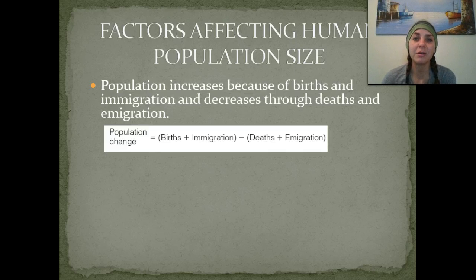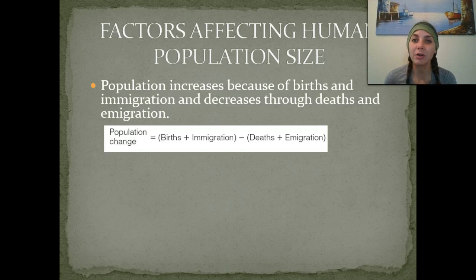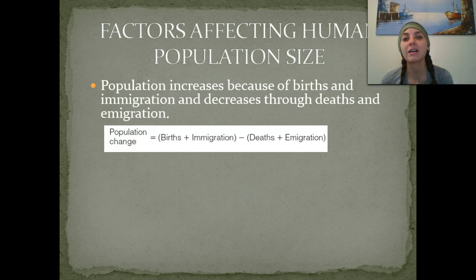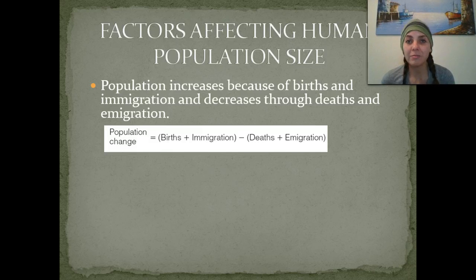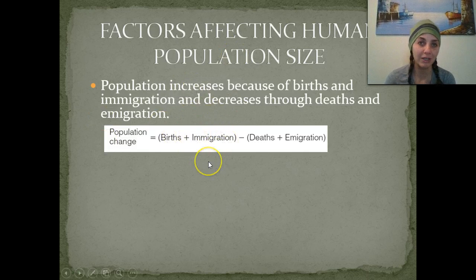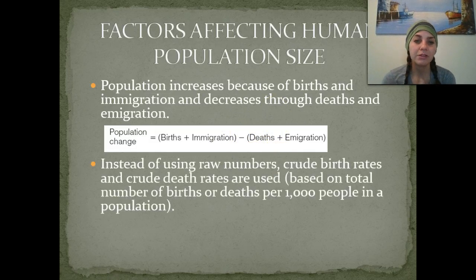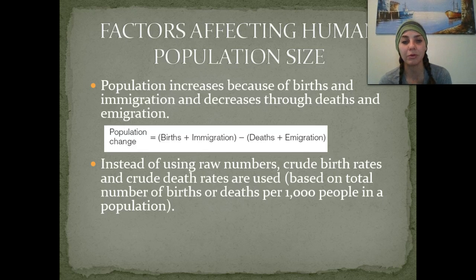The population increases because of the number of births and immigration, and decreases through deaths and emigration. Immigration with an I means that people are coming into a population or into a country. Emigration means that they are leaving. Population change is equal to the number of births plus immigration, minus the number of deaths plus emigration. Instead of using raw numbers, crude birth rates and crude death rates are used — based on the number of births or deaths per thousand people in a population.